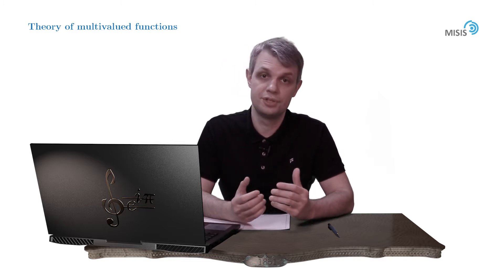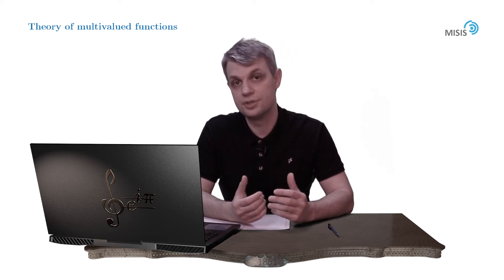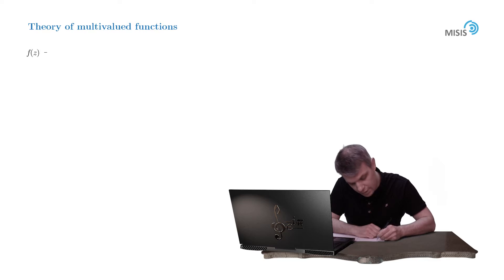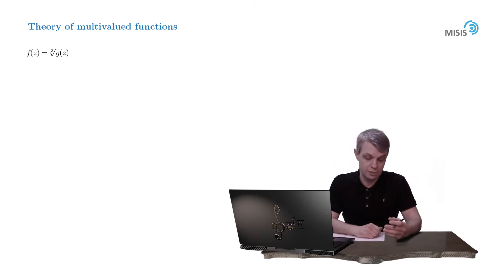So let's address a more general example. Let's consider the most generic cubic root function: f equals the cubic root of g function, where g function is an arbitrary function in complex plane. It's assumed to be single-valued and meromorphic.